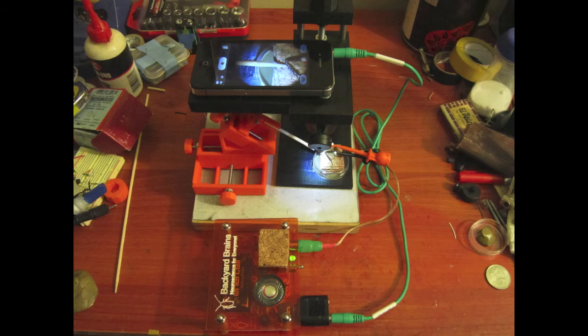But one example is to carefully manipulate the sentry hairs on a cockroach leg in combination with our roach scope and spiker box.